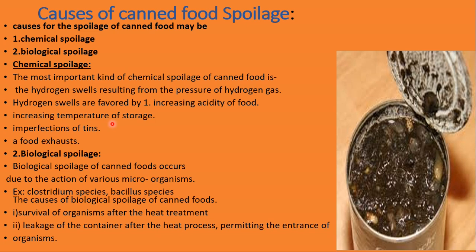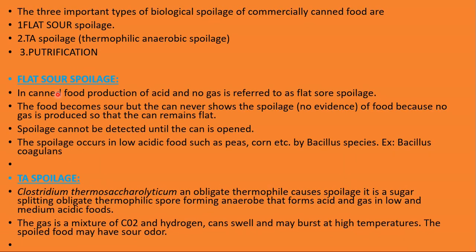Biological spoilage of canned food occurs due to microorganisms and may result from two causes: first, survival of organisms after heat treatment — microorganisms may still survive the canning process; and second, leakage of the container after heat processing, permitting the entrance of organisms. Either one or both of these can cause biological spoilage. There are three important types of biological spoilage in commercially canned foods: flat sour spoilage, TA spoilage (thermophilic anaerobic spoilage), and putrefaction.